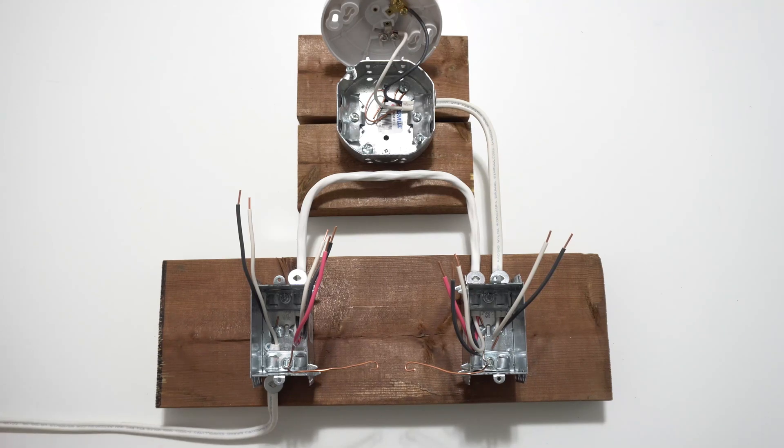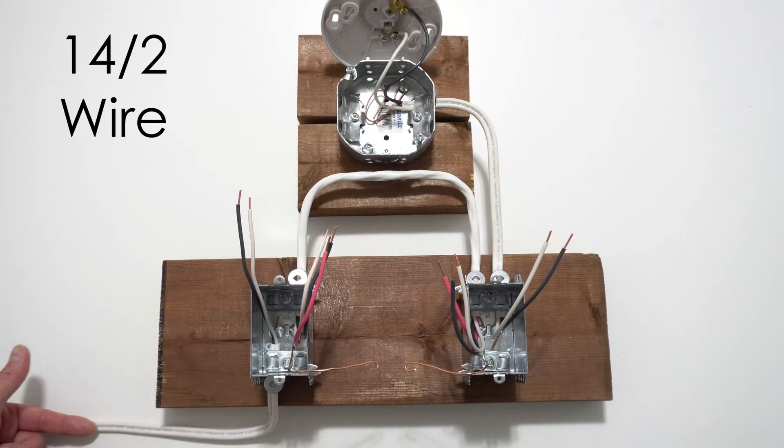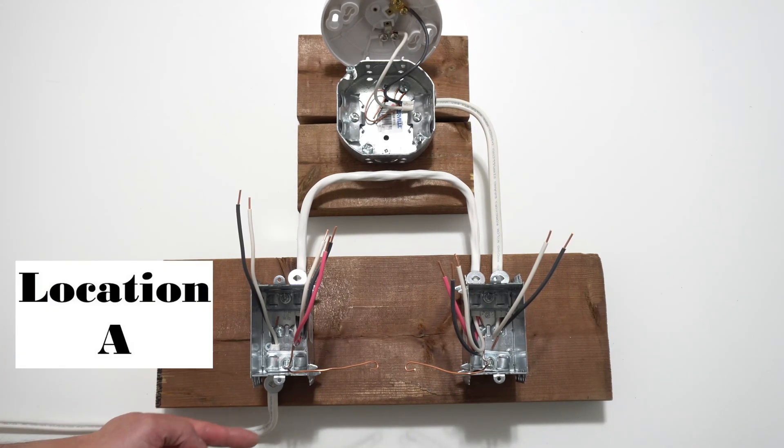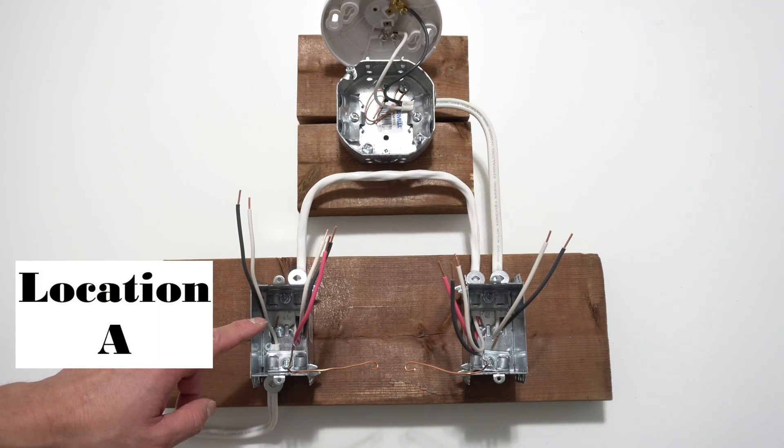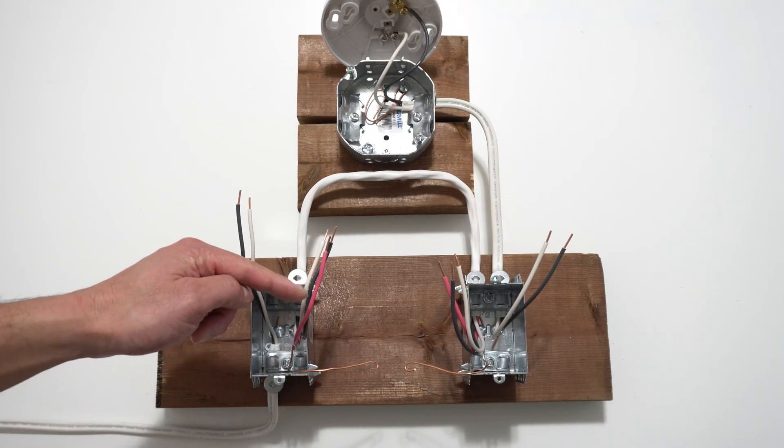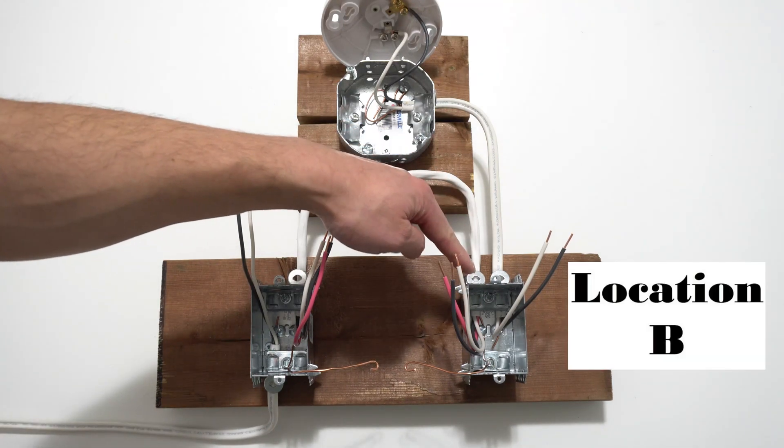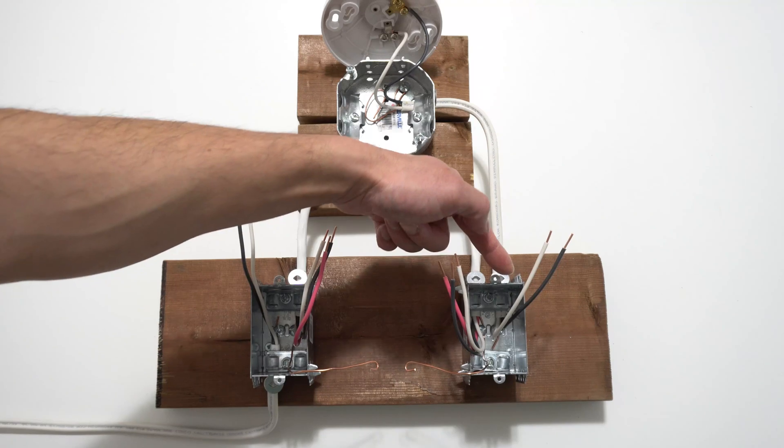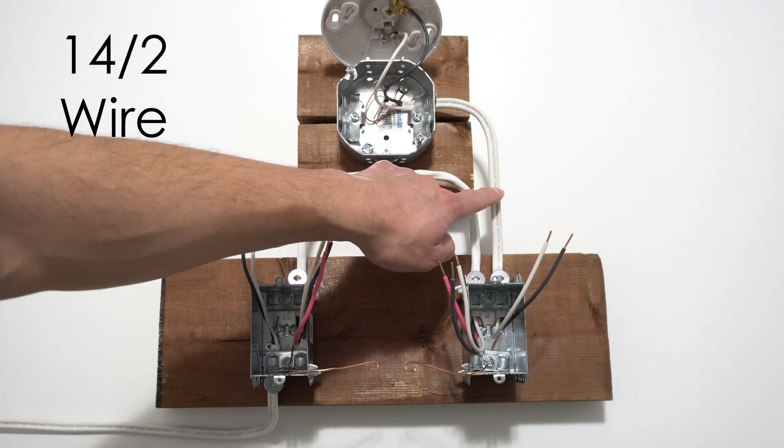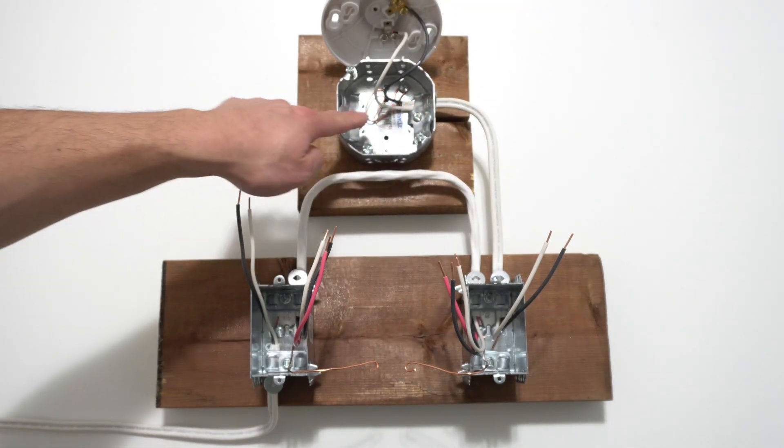Coming in, here we have a 14-2 wire which will carry the power source going into location A box. And coming out of location A box, here we have a 14-3 wire going into location B box. And coming out of location B box, here we have a 14-2 wire going into the light box.